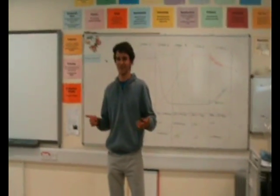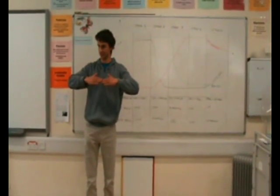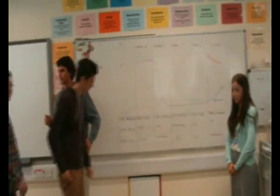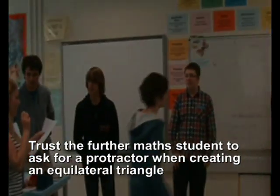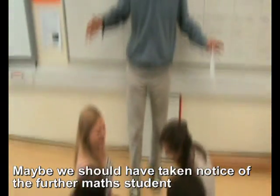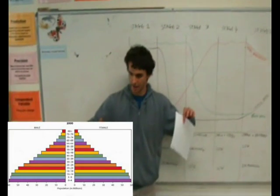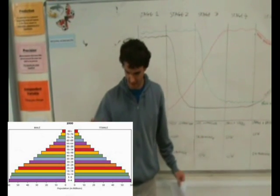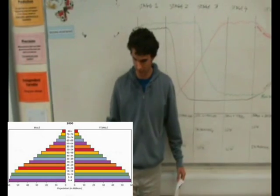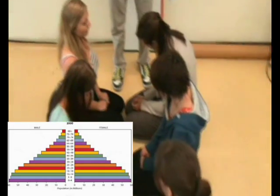We're going to arrange ourselves into a normal equilateral triangle shape. Here we have a beautiful stable population pyramid — this represents the world population, which is more or less stable, so the average birth rates and death rates are equal. You should be seeing a nice perfect triangle here.